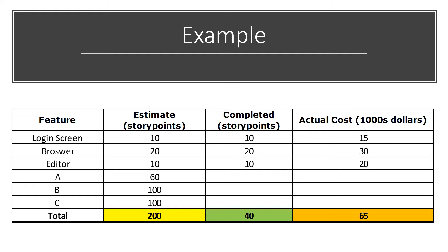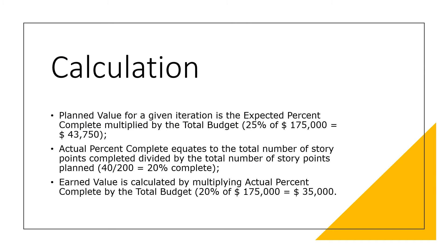Let's see an example to clarify these three concepts. With a total project budget of $175K and having completed one out of four iterations, we have this product backlog and these actuals. With this information, which is easily available in any scrum project, it is easy to calculate our three base values. Expected percent complete equals the number of completed iterations divided by the number of planned iterations. In our example, after iteration 1, we should be at 25% complete. EVM in agile works by comparing the current release plan — taking changes in requirements into account — against the actual work performed. We can see at a glance that our project is in trouble: the earned value is less than the planned value — EV = $35K and PV = $43,750.